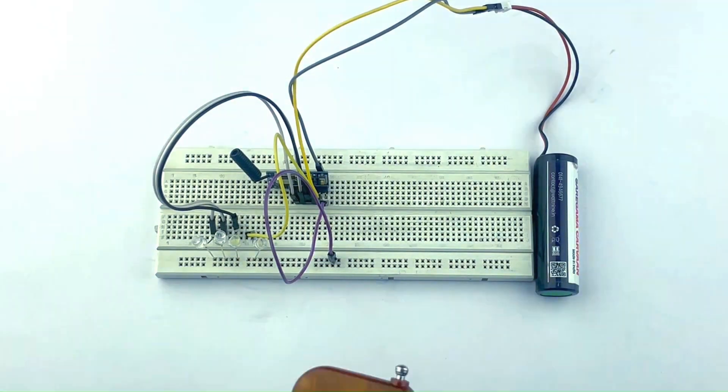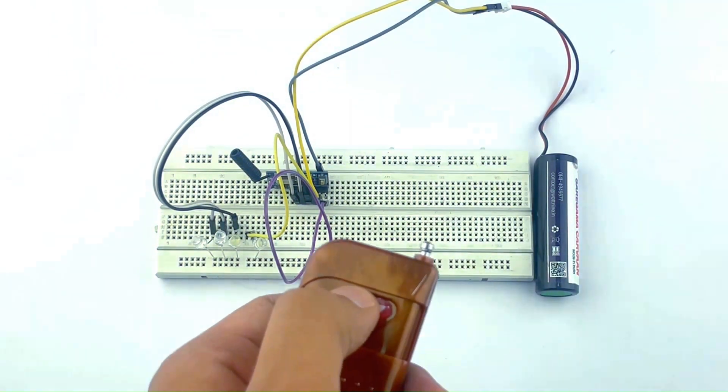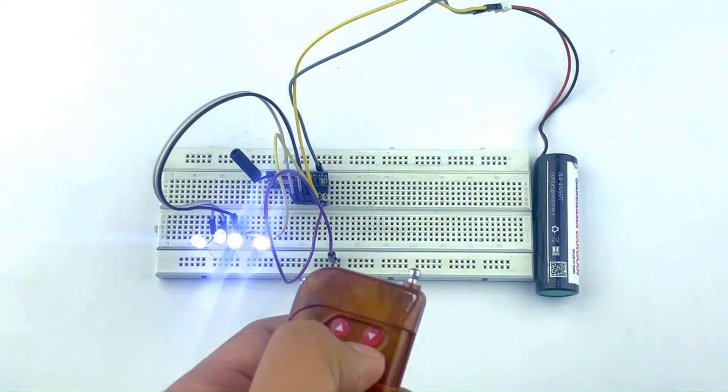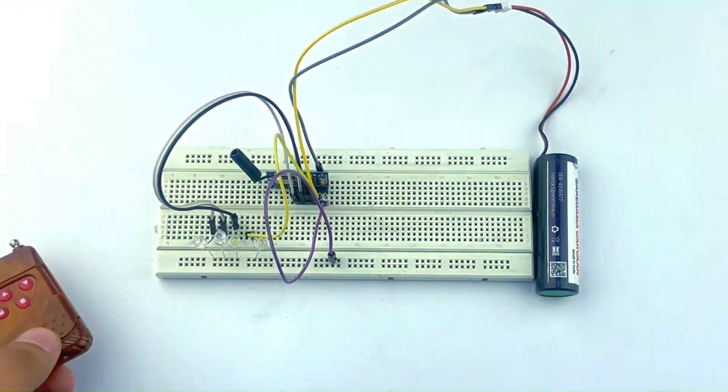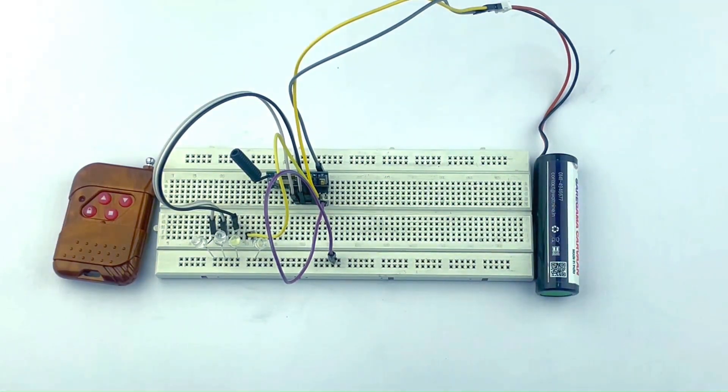Let's see if all the buttons are functioning properly or not. So one, two, three, and four, three, two. All of these buttons are functioning properly. We have correctly interfaced the module.